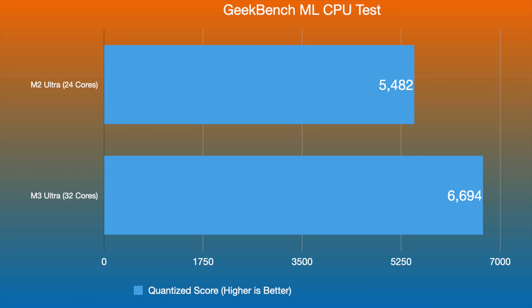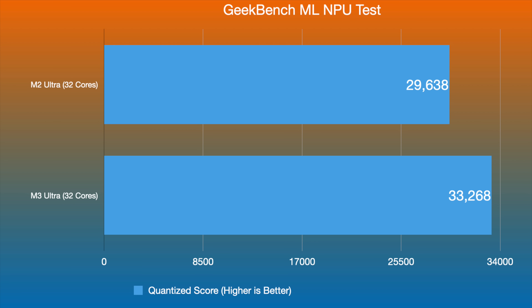Running the same Geekbench AI test on the GPU, the distance is a bit more pronounced. The M3 Ultra utilizing its GPU cores for machine learning tasks scored 21,258 compared to 16,904 — nearly 17,000 — for the M2 Ultra. That's a more meaningful gap when using the GPU for these kinds of workloads.